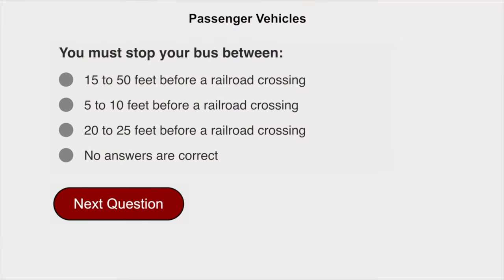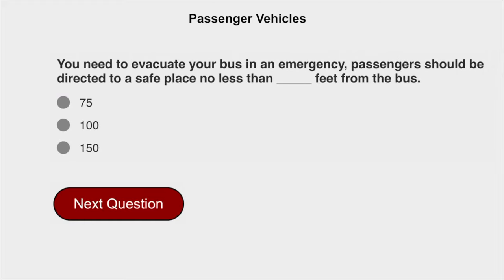You must stop your bus between 15 to 50 feet before a railroad crossing. When you need to evacuate your bus in an emergency, passengers should be directed to a safe place no less than 100 feet from the bus.